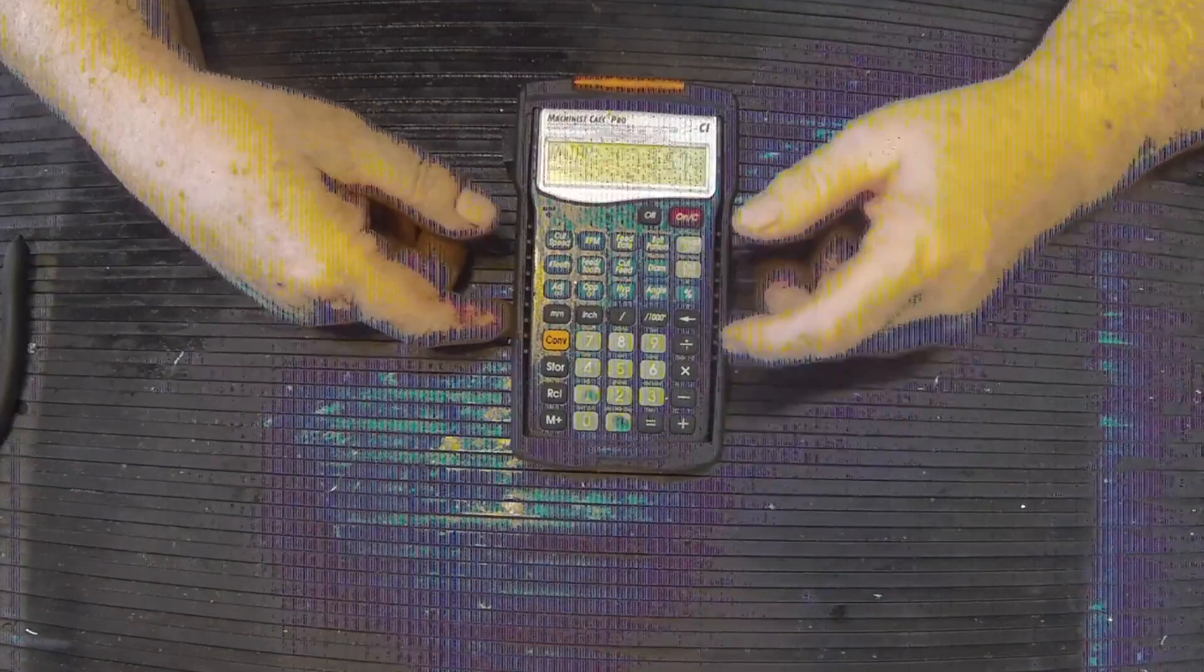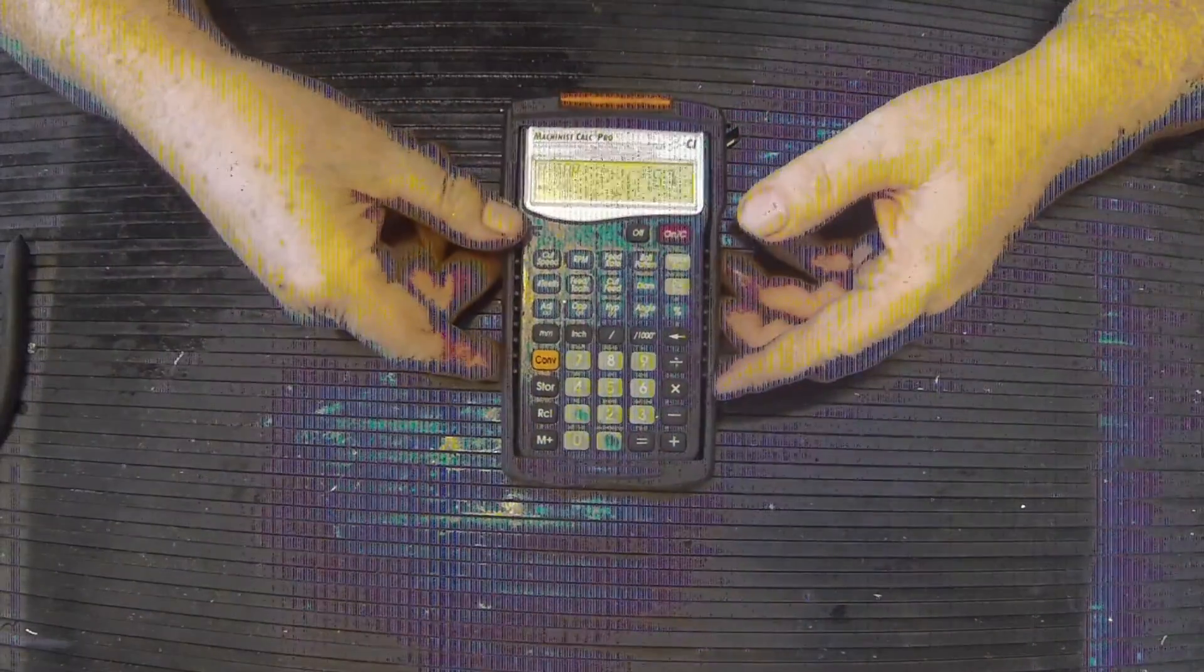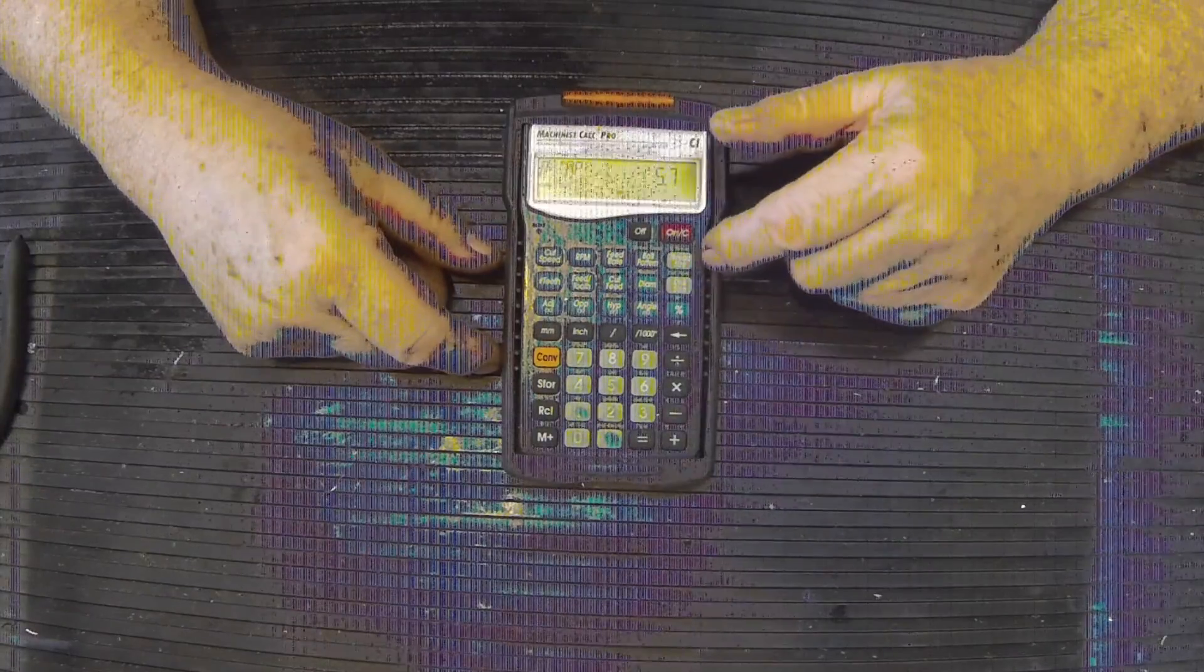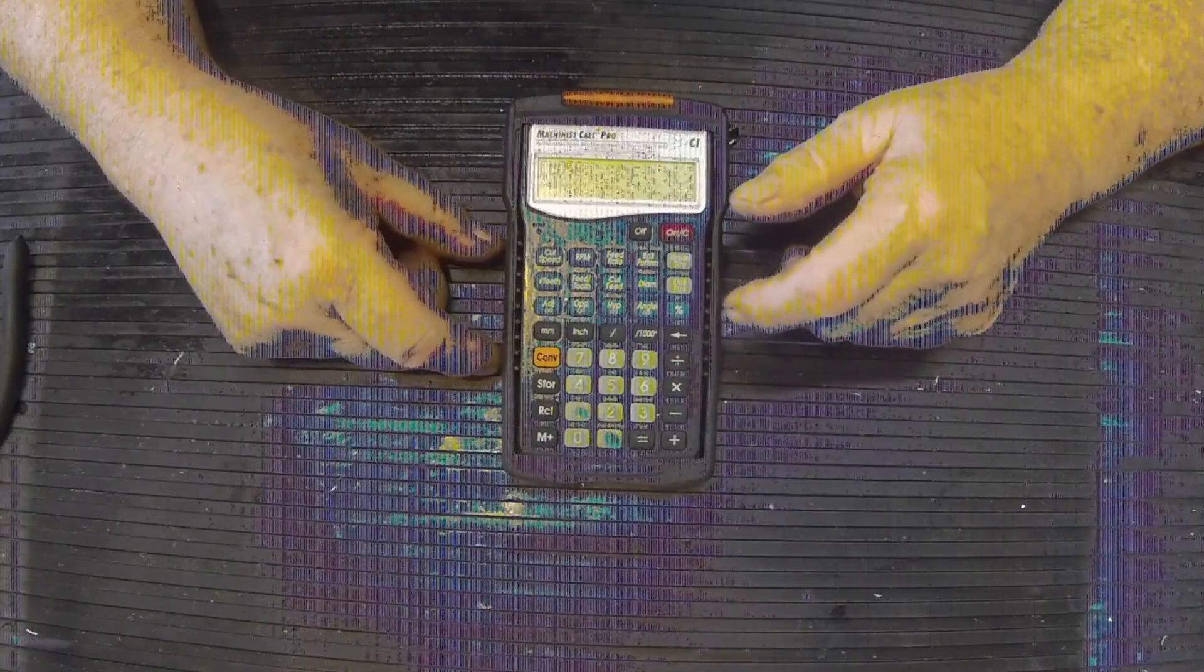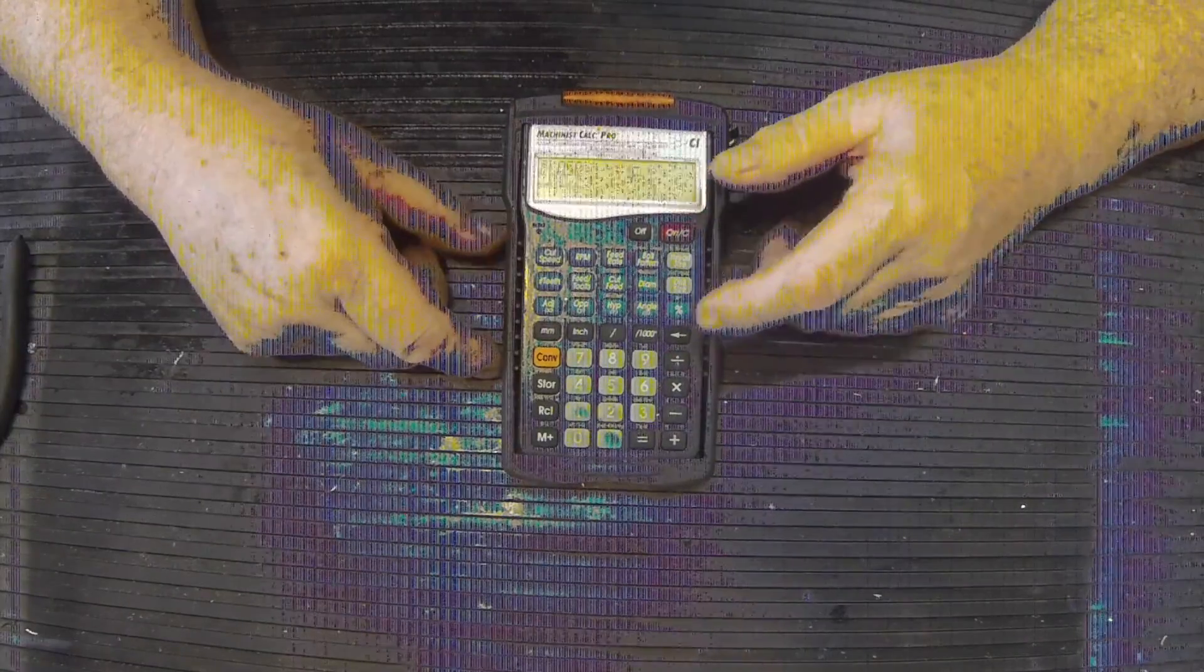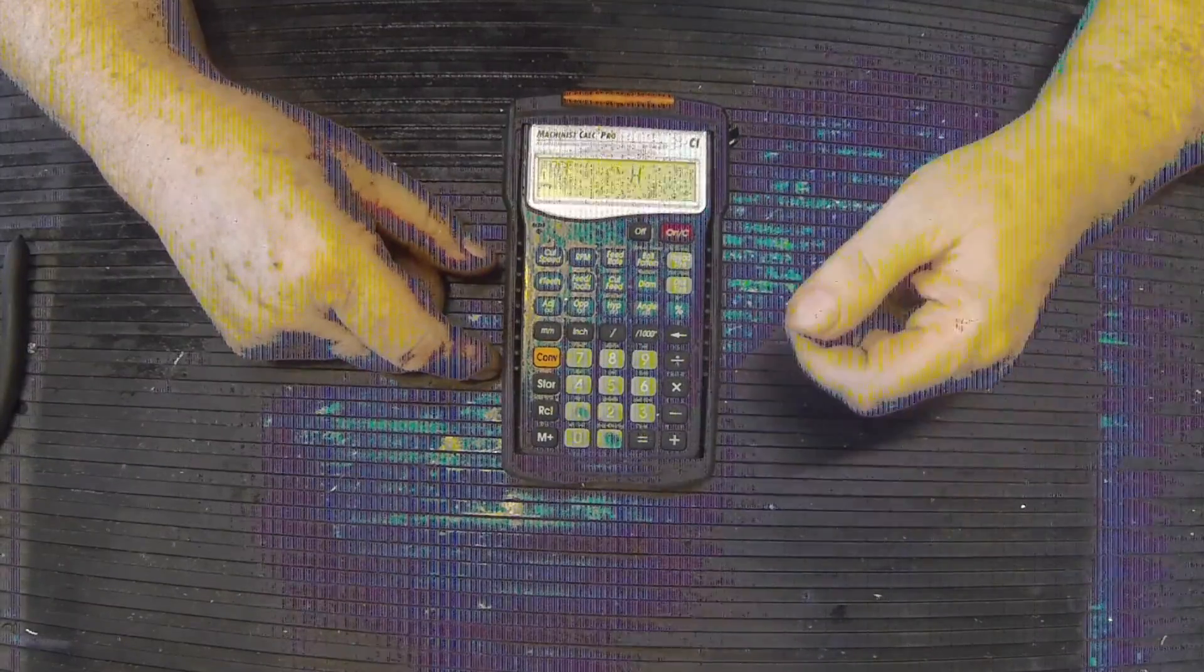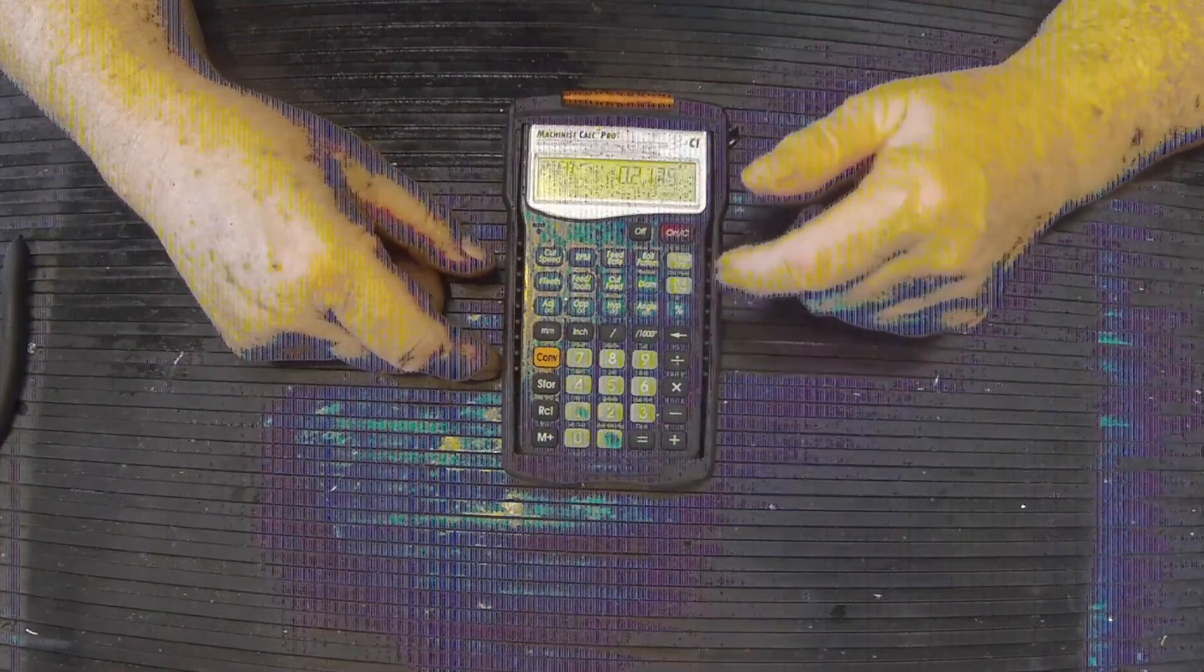And it says the tap is a number seven drill. Hit it again and it says the R tap is 5.7 millimeters - that's the metric drill size. Hit it again and that's a close fit, is an F drill. Loose fit is an H drill.